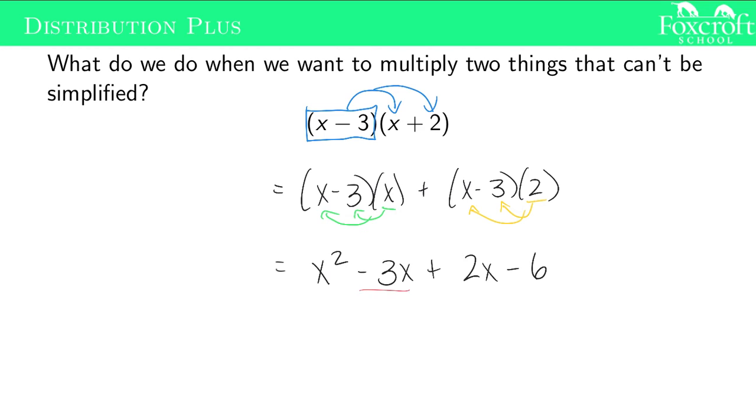That's not our final answer because there's some like terms. Remember, like terms are anything that have the exact same variable part. So if I have minus 3x's and plus 2x's, that's going to give me minus 1x. So this is the expanded version of those two pieces at the top. We do the distributive property twice to get down to that answer.